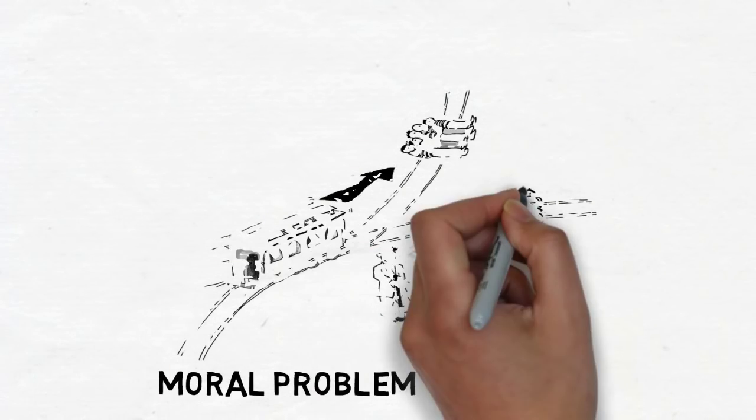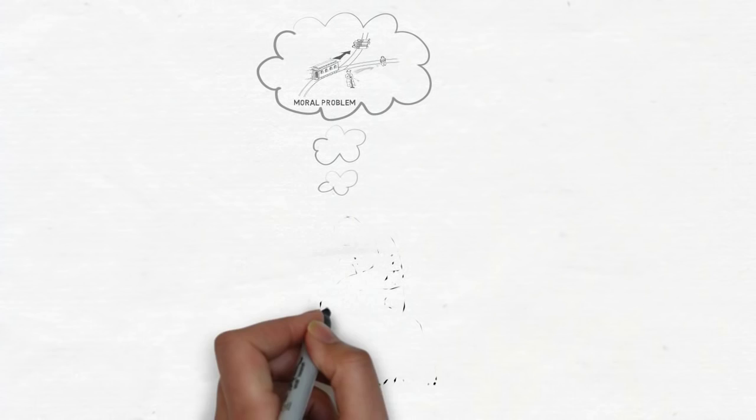Roughly, a meta-ethic is an account of what morality is and how, via an ethics, we are to go about being moral.